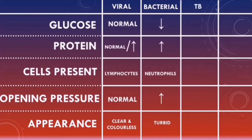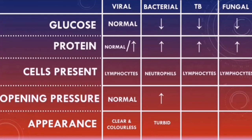In tuberculosis and fungal meningitis, the CSF glucose will typically be low, and the CSF protein will typically be raised in both types. The predominant cells will be lymphocytes, and the opening pressure will be raised in both types. The CSF can look cloudy in both types of meningitis. Interpreting CSF results will help give a good idea of the most likely cause of meningitis.